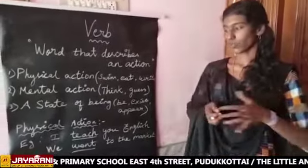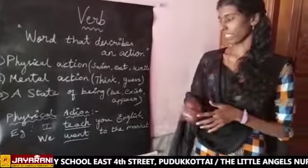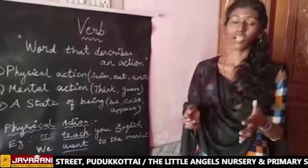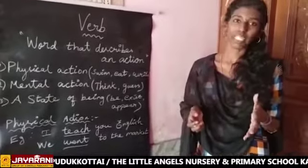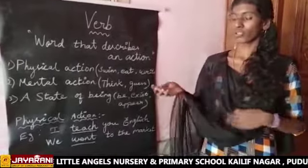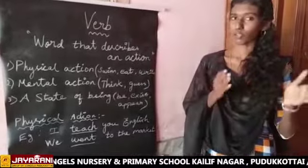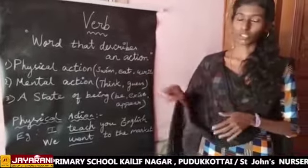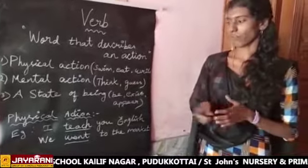The third one is a state of being. The state of being describes how we are existing and appearing. If you look at the examples, you will get a clear view of all three types of actions.